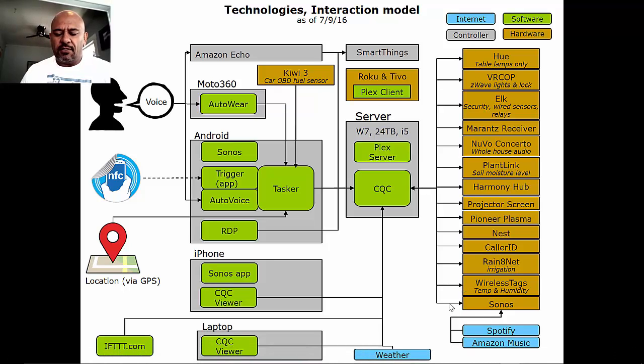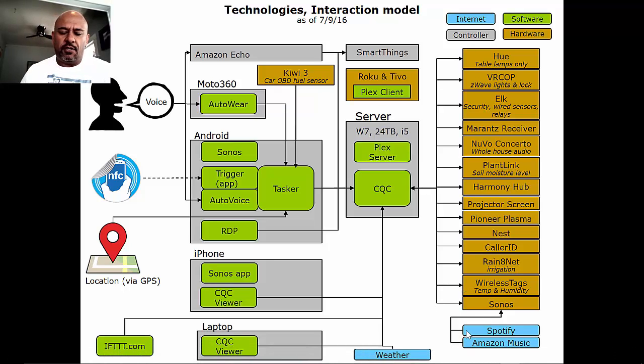There are a few different internet devices that, I'm sorry, internet pieces of software. So Spotify and Amazon Music, I control via the Sonos. And then the weather feeds directly into CQC.